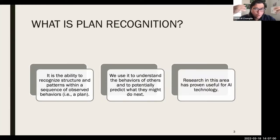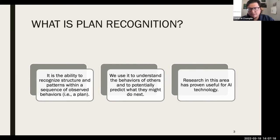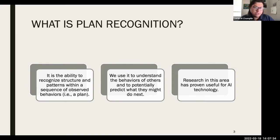So first of all, what is plan recognition? To put it shortly, it is the ability to recognize structure and patterns within a sequence of observed behaviors — in other words, what we call a plan. We use it to understand the behaviors of others and to potentially predict what they might do next. It's proven to be a very useful area of research for AI technology.